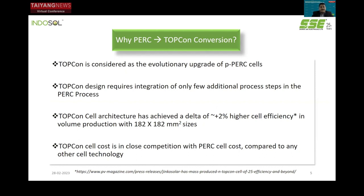TopCon is a relatively new technology — it was discovered by Fraunhofer ISE, Germany, and the name was coined back in 2013. The process route was so successful that from lab to fab it got established very quickly compared to PERC. This has become very useful when a manufacturer wants to upgrade from PERC to TopCon, mainly because it has only a few extra processing steps. Typically TopCon yields an extra delta of 2% higher cell efficiency in high-volume production with large size areas — 182 mm squared — as reported by Jinko recently. TopCon cell cost is also in very close competition with PERC cell cost compared to any other cell technology.